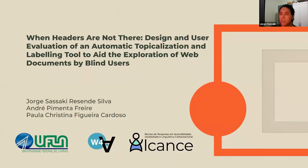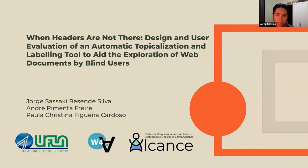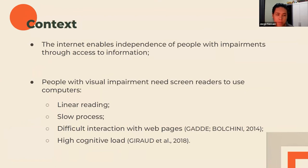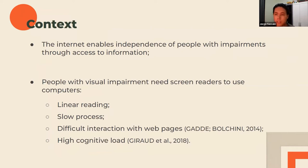My name is George and I'm here to present this paper, which I did with Andre and Paul. For the introduction: the internet has become this massive source of information, and this helped people with impairments have more independence because of ease of access. But it doesn't come without obstacles. Our focus was on people with visual impairments, who use screen readers. This process can be slow because the reading is linear — you can't do diagonal reading in large texts or quickly search for keywords as sighted people do.